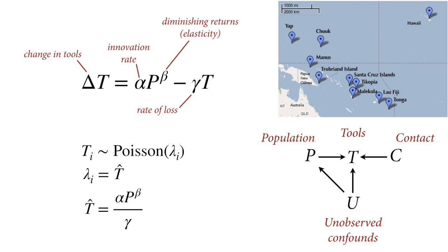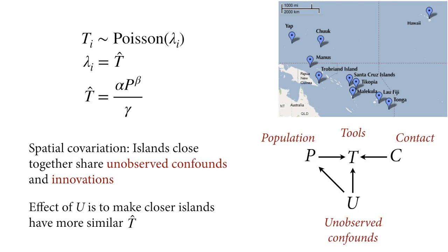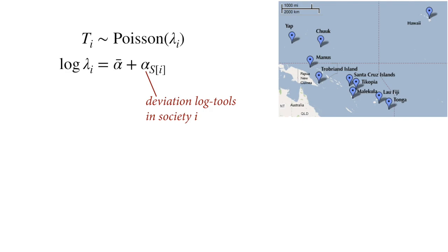How do we get spatial covariation and spatial confounding into a model like this? Let's back up and develop the spatial covariation strategy without the population mechanics first, then fold it back in. This is also the way you should work on your own problems: develop each piece of the model and test it independently of the other bits, then combine the pieces into the model you need. You know your destination, but you can't go straight there — you have to build and test incrementally.